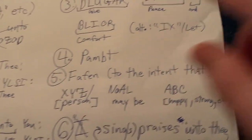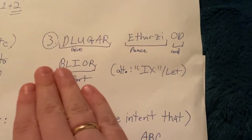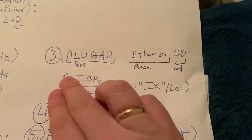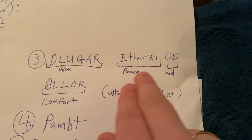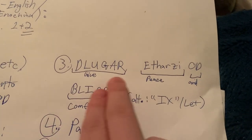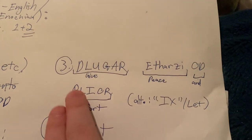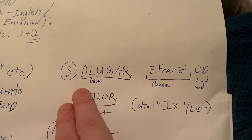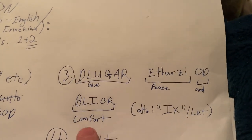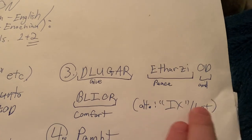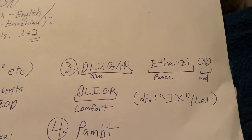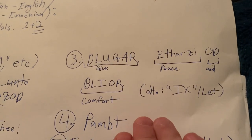The next part — I'm just giving an example of what you could request. You might request peace — 'atharzi' — and comfort — 'blyor.' So, 'de lugar etharzai od blaior' means give peace and comfort. Pretty basic. An alternative might be to say 'eek slet' and whatever — you would need to look up the rest of that in a dictionary.